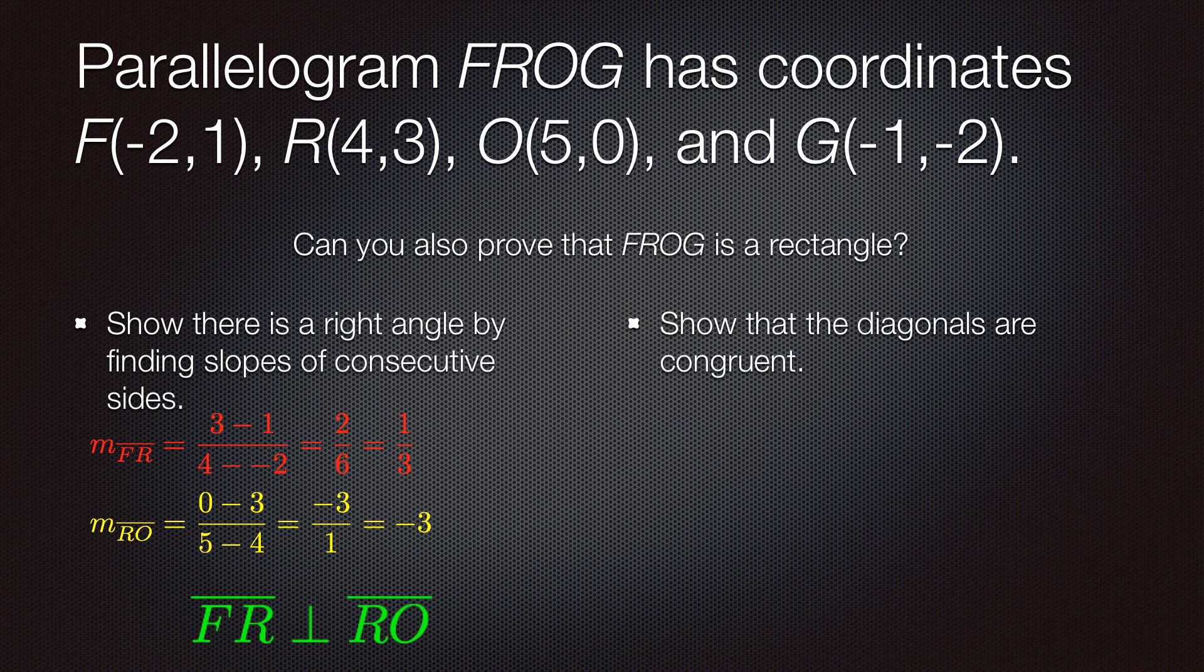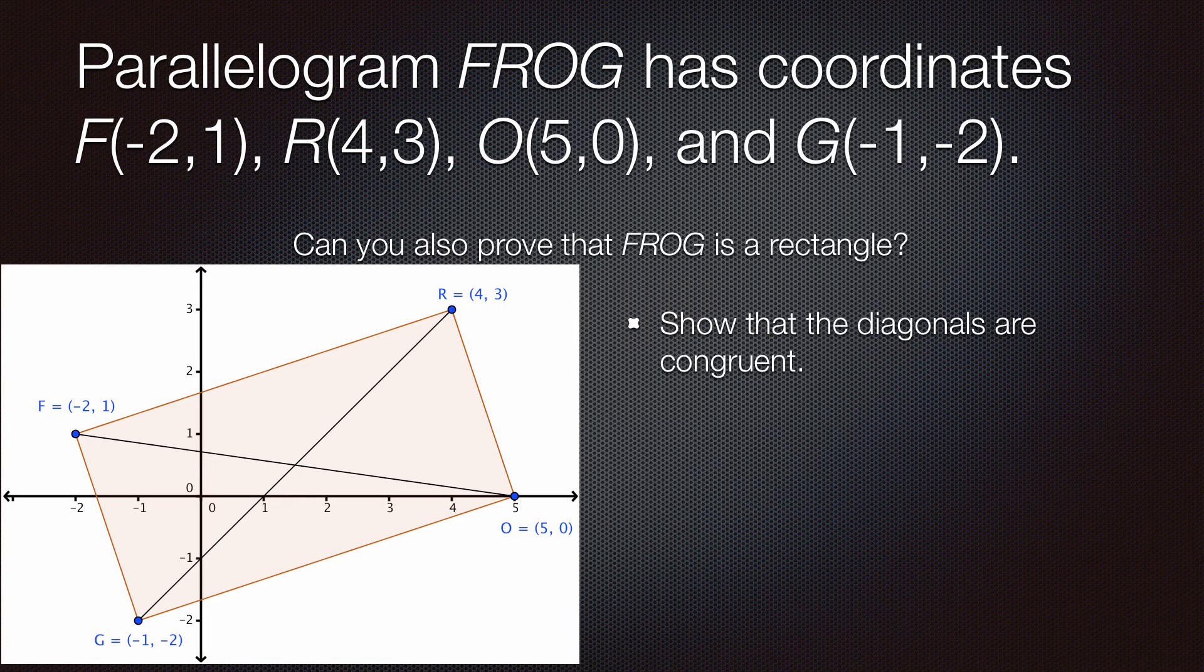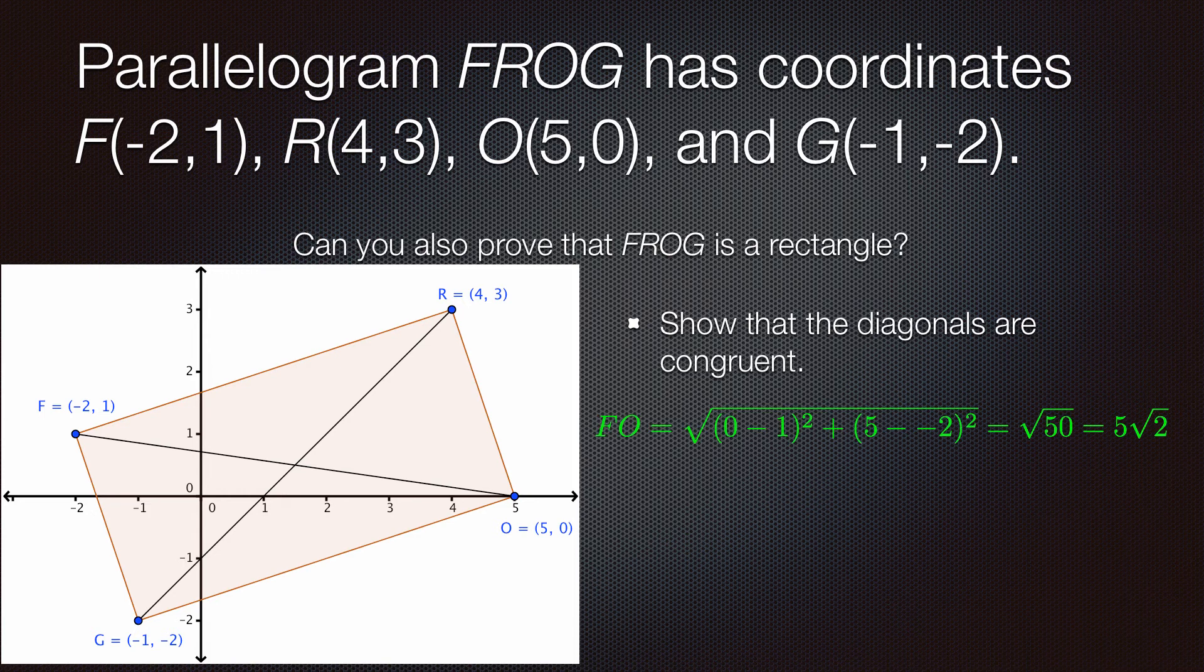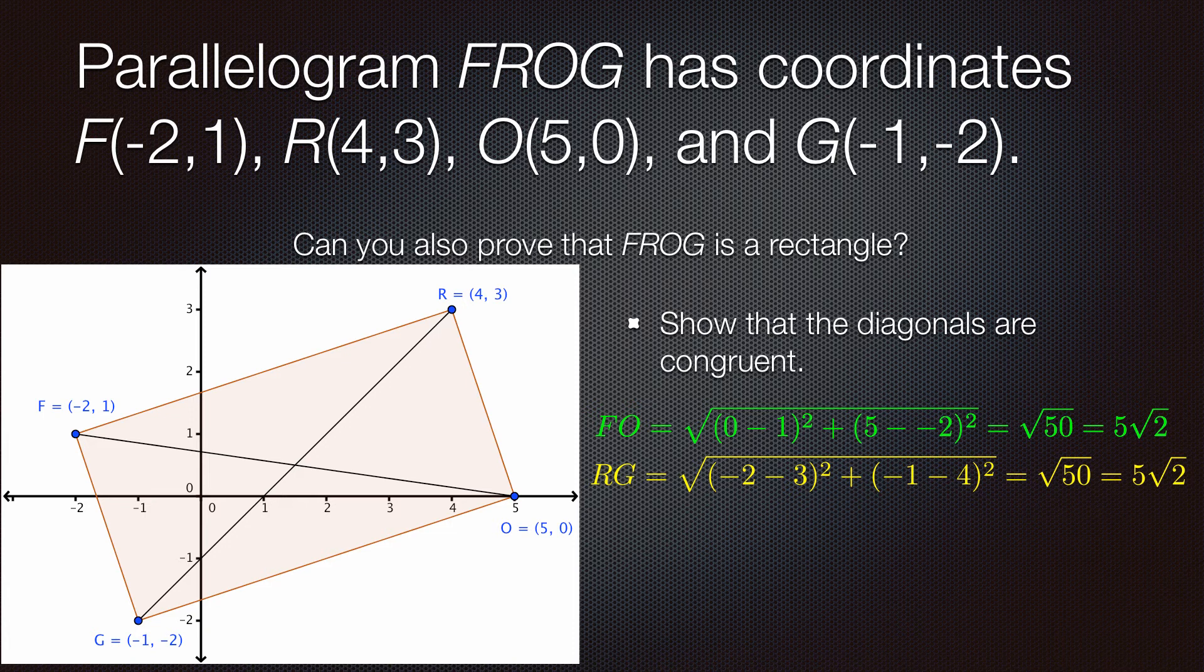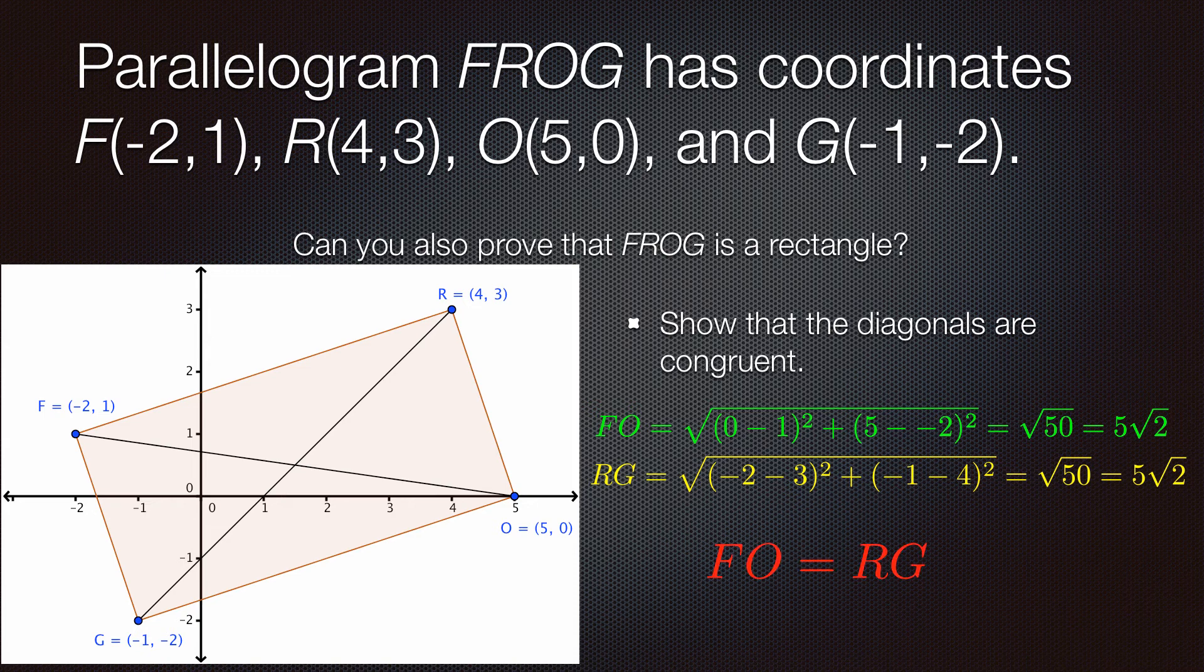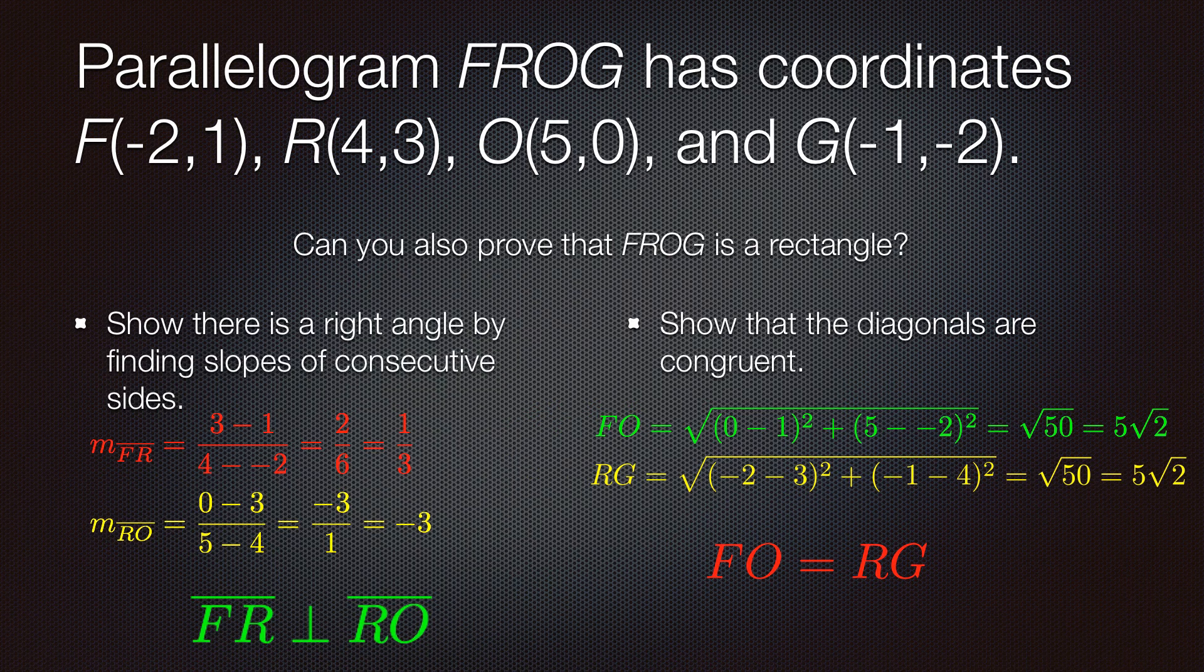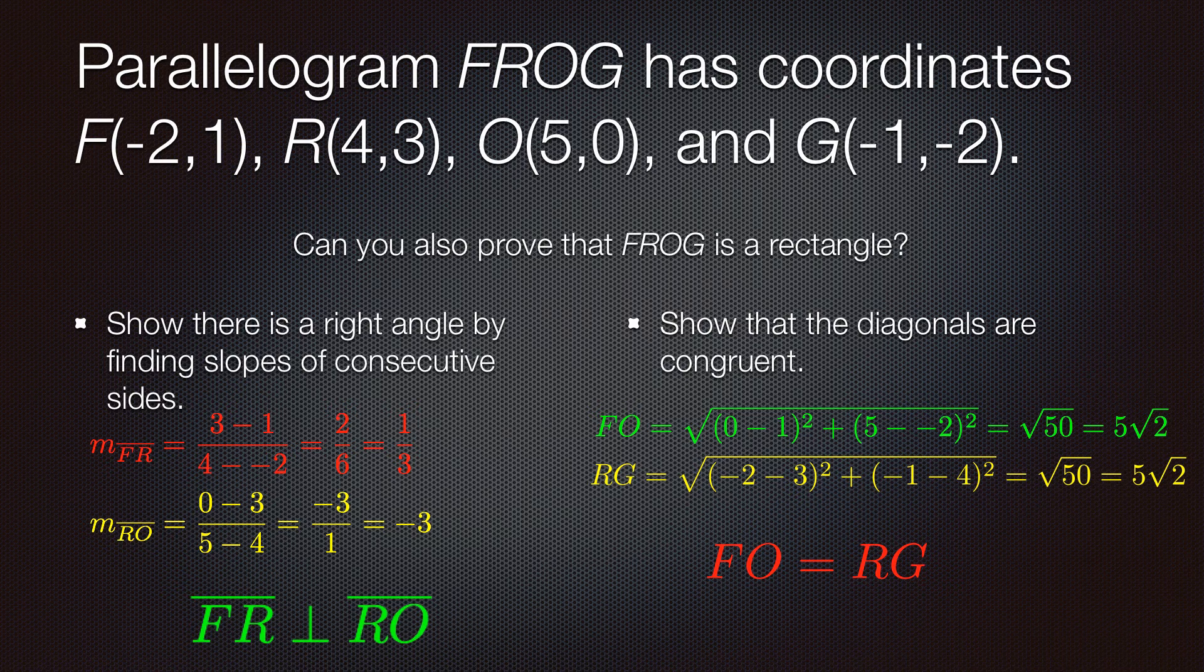Another way to prove that FROG is a rectangle is to show that the diagonals are congruent. We already know that the diagonals bisect each other because FROG is a parallelogram. But, we also want to use the distance formula to show that they're equal in length. So, FO is equal to 5 root 2. RG is also equal to 5 root 2. And so, therefore, the diagonals are congruent because their lengths are equal. So, two ways to prove that this is a rectangle. One by using slopes of consecutive sides. And the other by using the lengths of the diagonals.